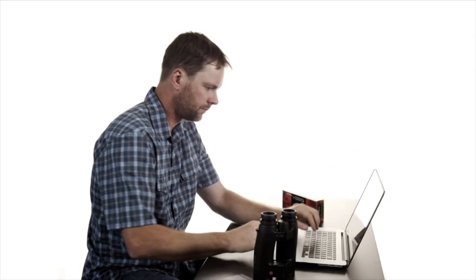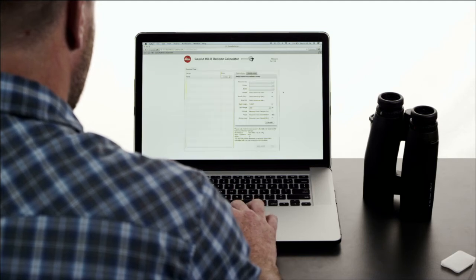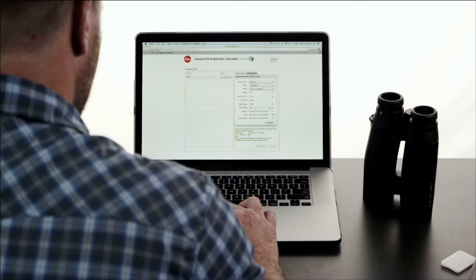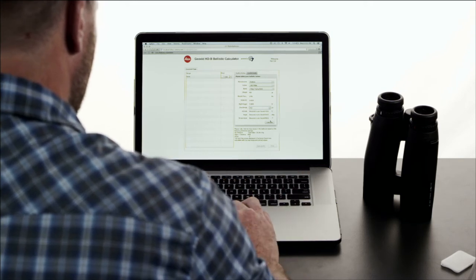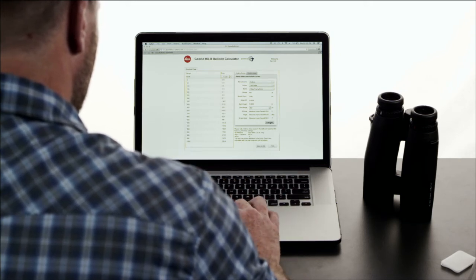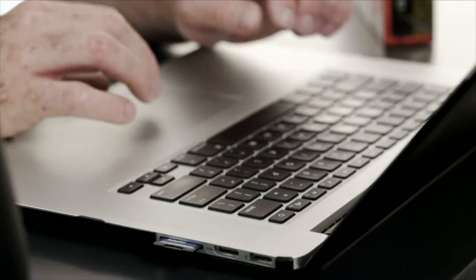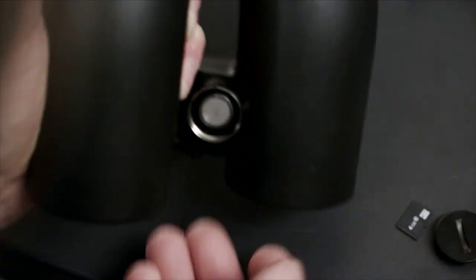The second and more precise way to enter your curve is to use the Ballistics Calculator found on the Leica Geovid website. First, select your ammunition from the three drop-down menus. If you load your own ammunition, you can enter that information in the Custom Load section. Select your sight in distance and click the Calculate button. Then review the information on the left and if it looks good, save it to your micro SD card. Eject the micro SD card and insert it into the Geovids through the battery housing.